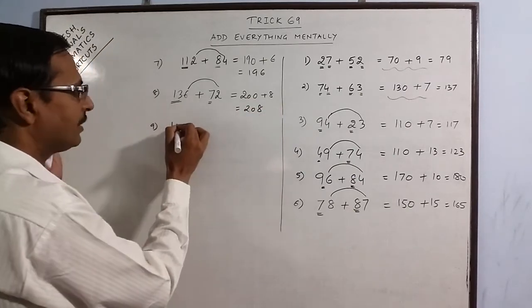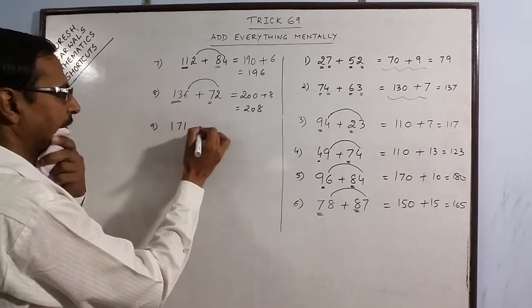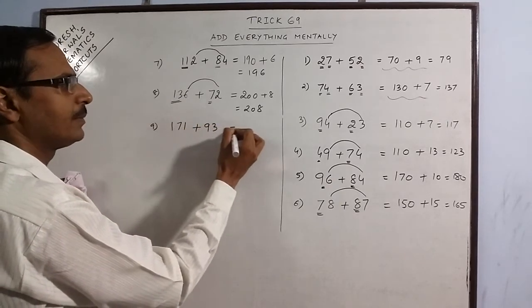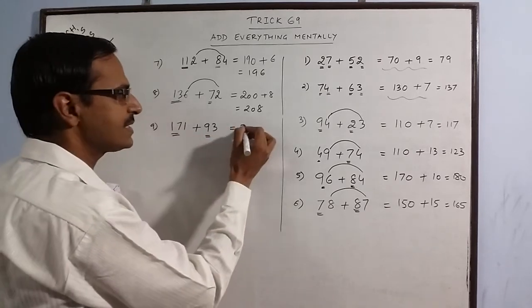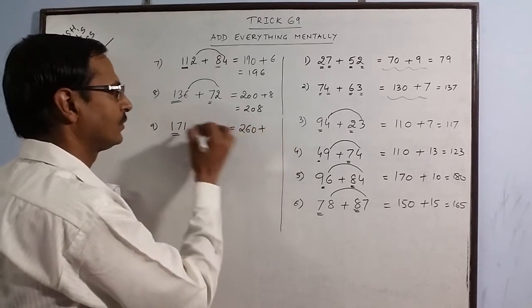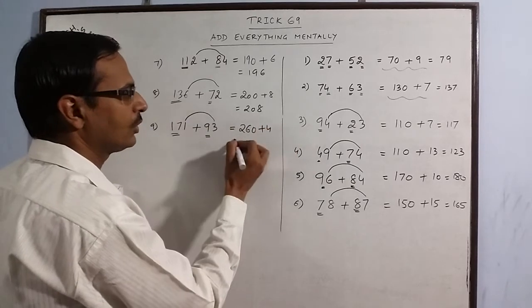171 plus 93. 17 plus 9. 26. Put 1 0. 1 plus 3 is 4. 264.